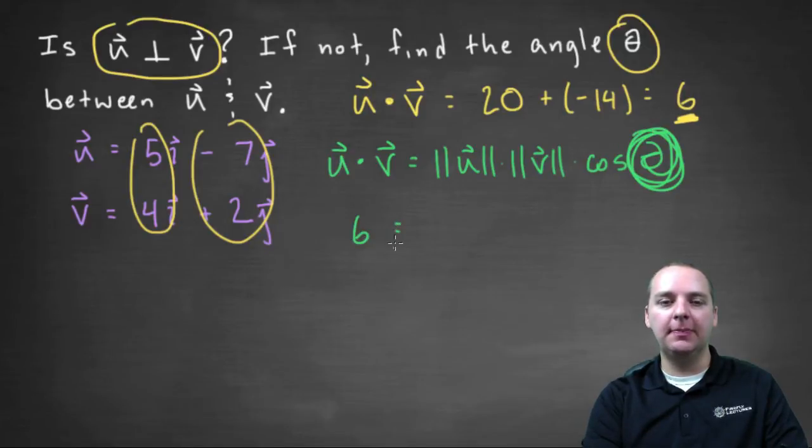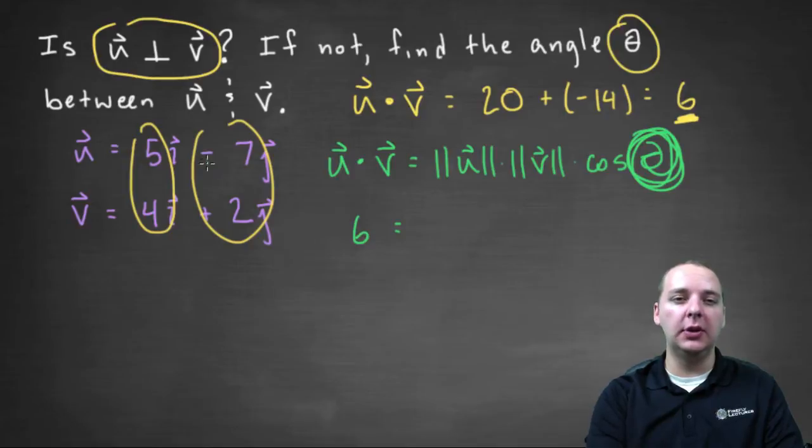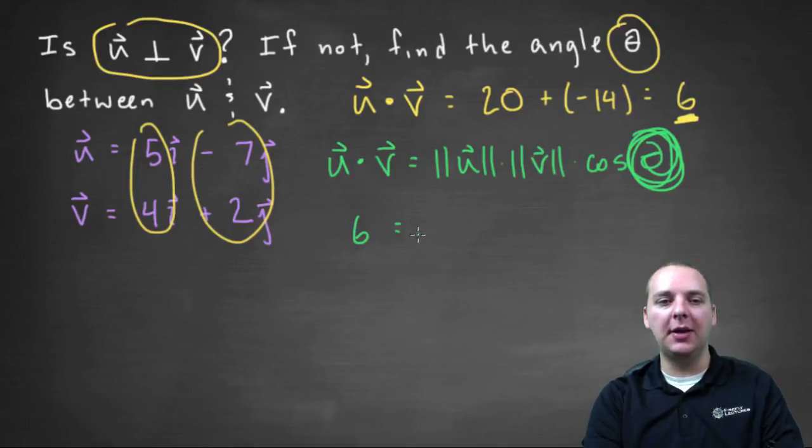The magnitude of u, I'm going to spare us some algebra just for time's sake. I would suggest doing this on paper yourself. But just to save us some time, I think the magnitude of u is going to be the square root of seventy-four, and the magnitude of v I think is going to be the square root of twenty times the cosine of theta.